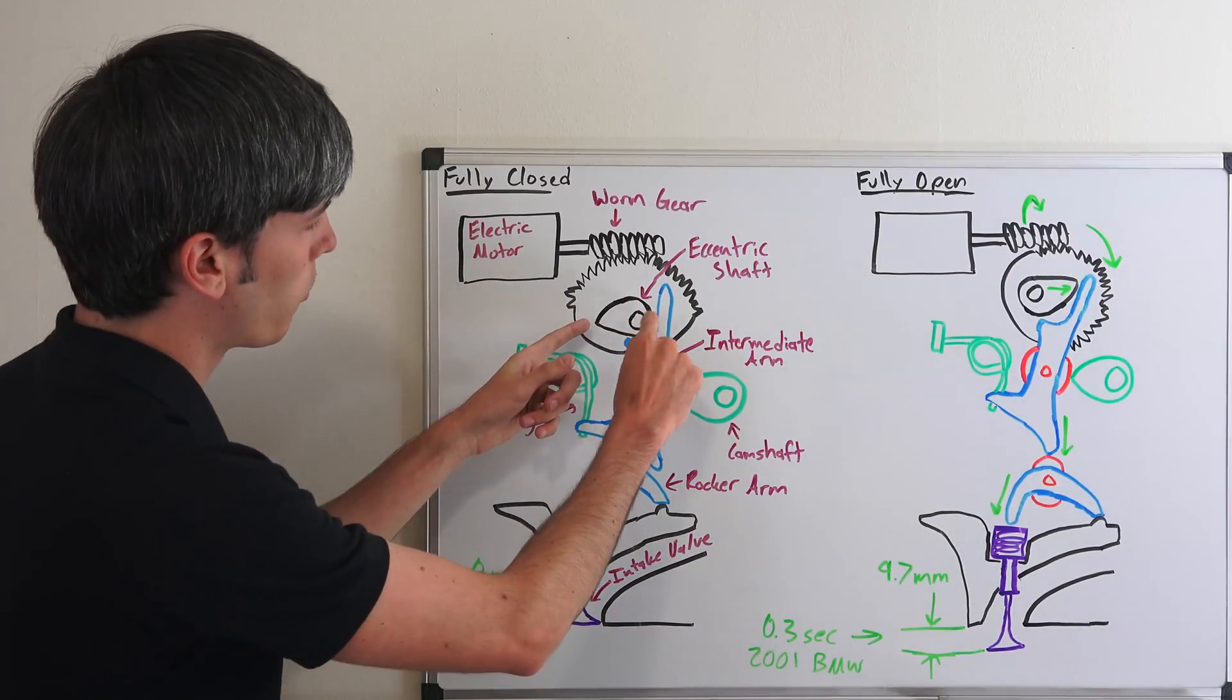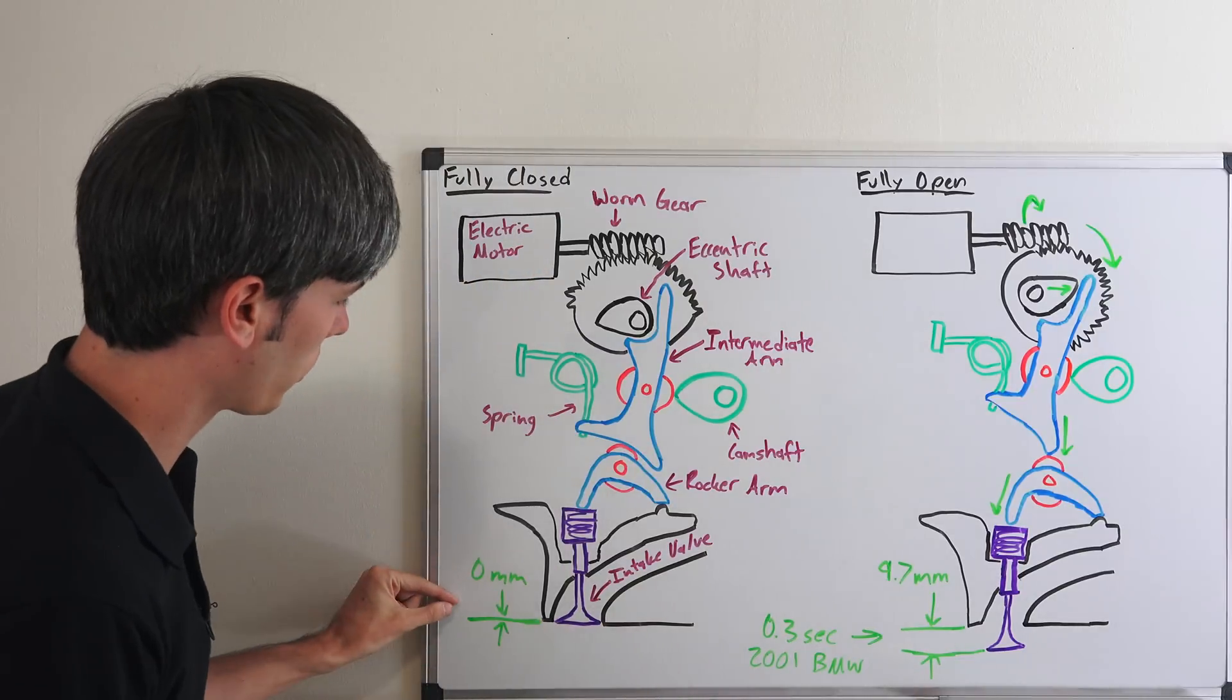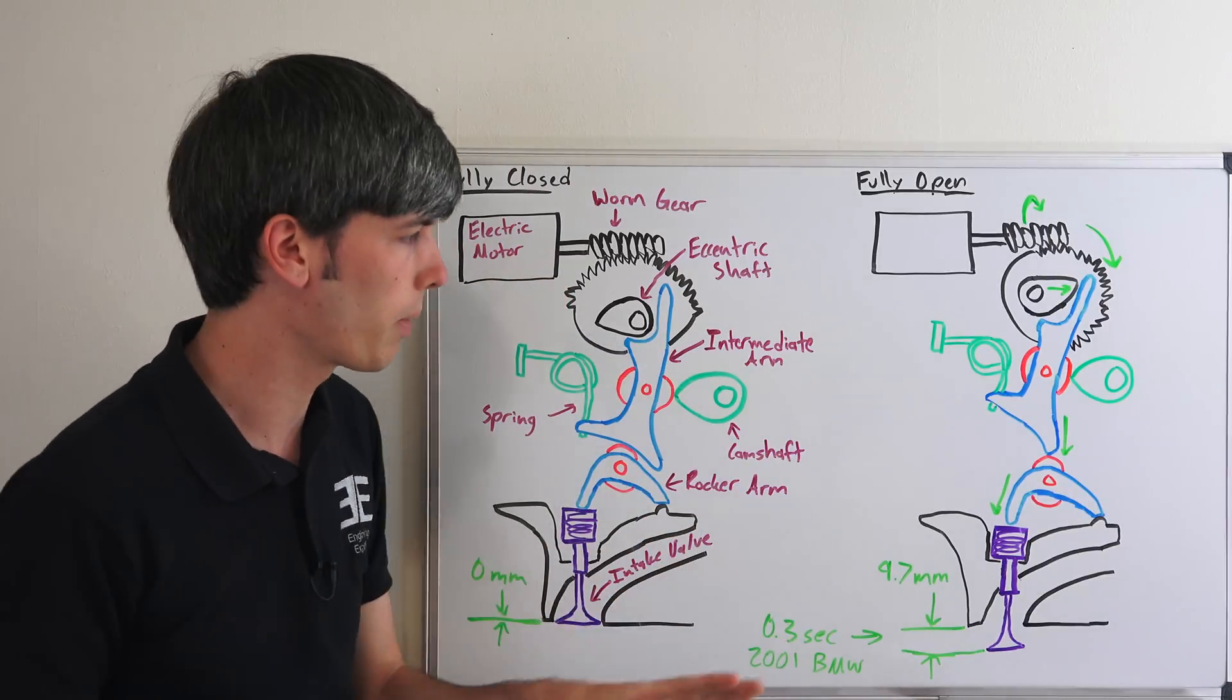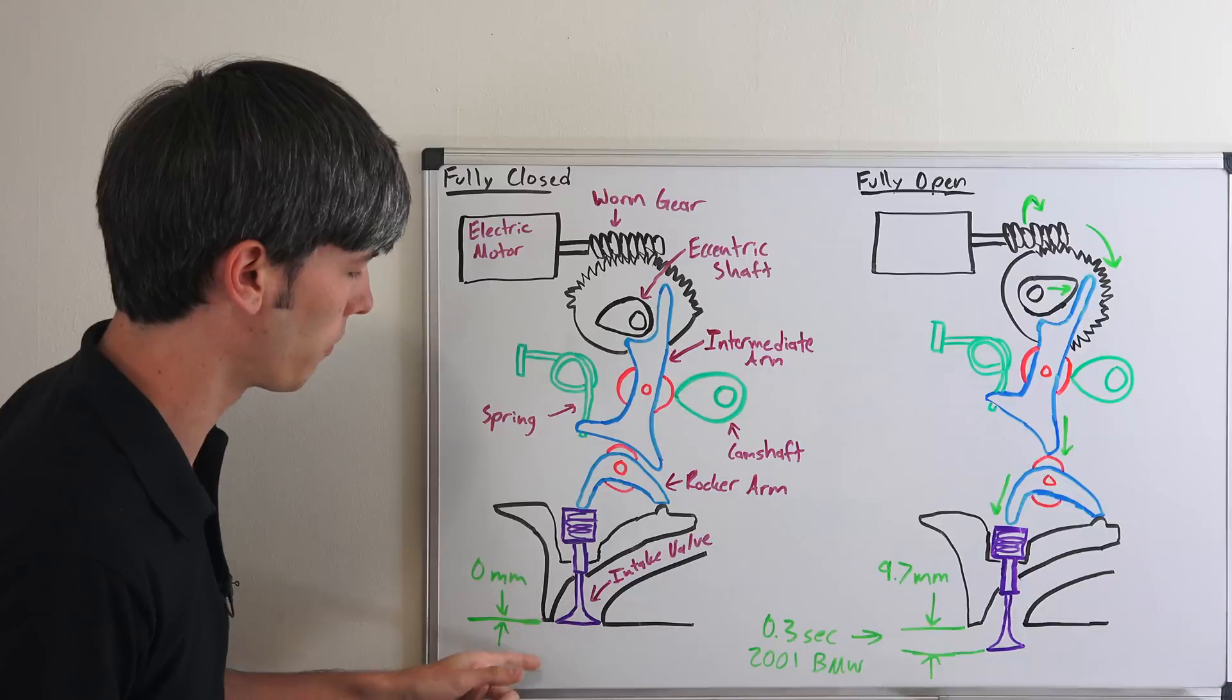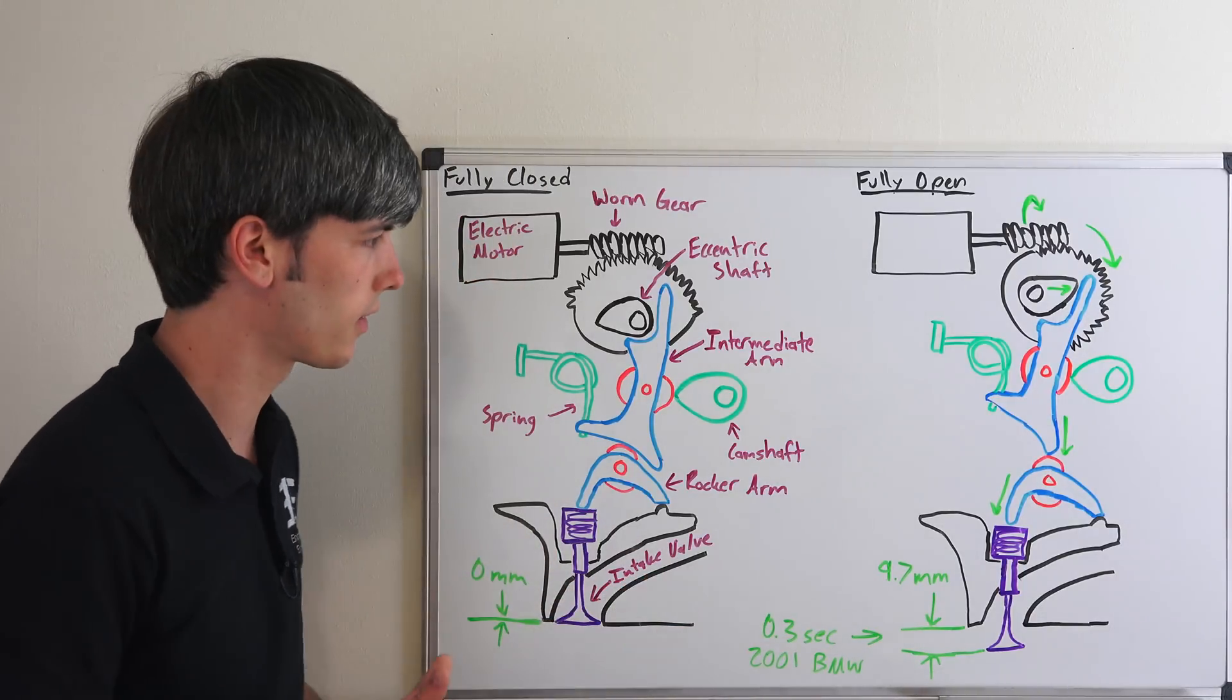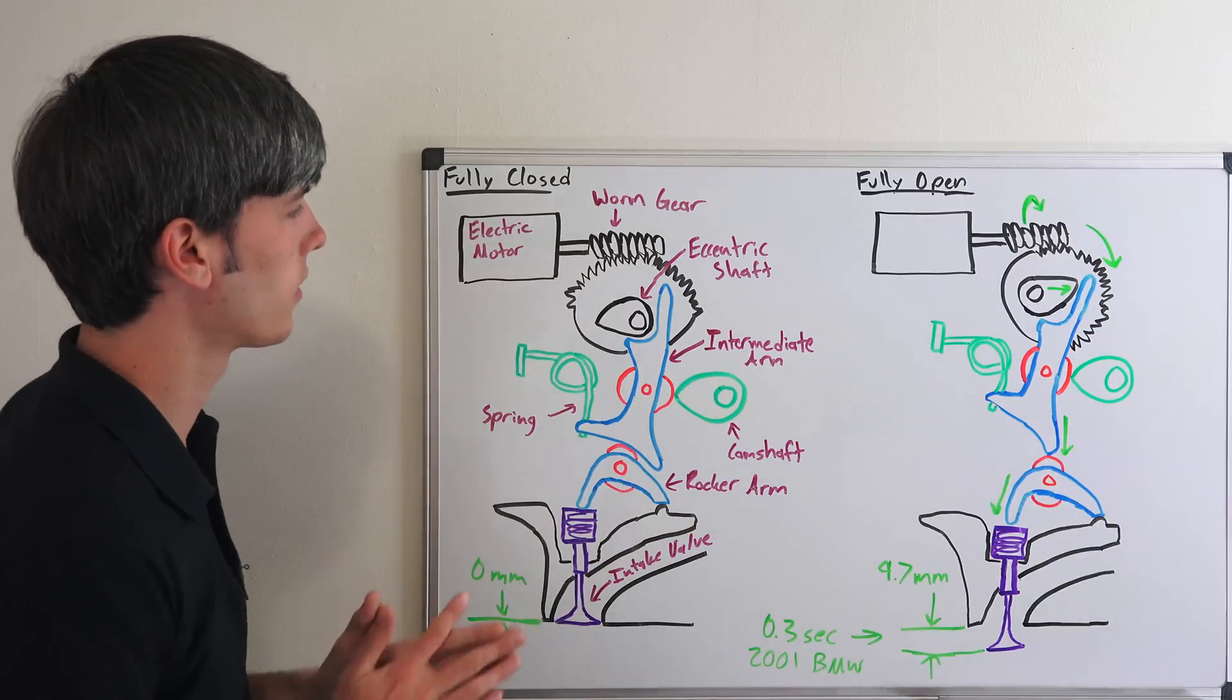Because of this profile, you have an infinitely variable system between 0mm with it fully closed and 9.7mm with it fully opened. This was introduced by BMW back in 2001, and even back then they said they could go from fully closed to fully open in just 0.3 seconds. They've probably improved that time since then as technology has improved, but going back to the very basics, this is how it works.